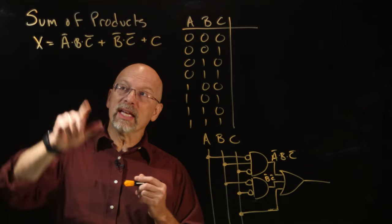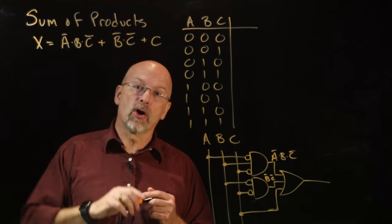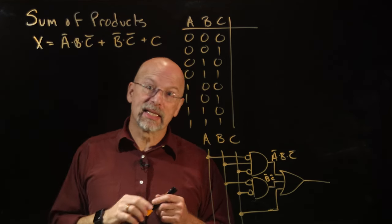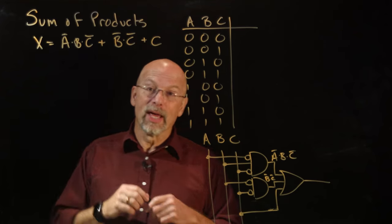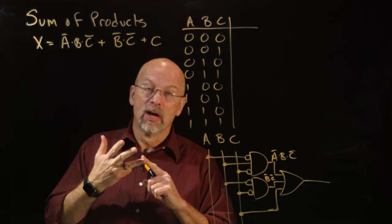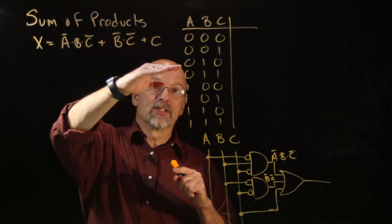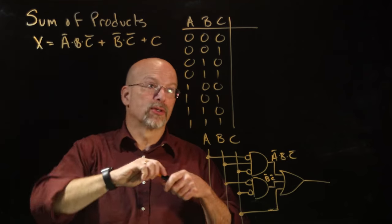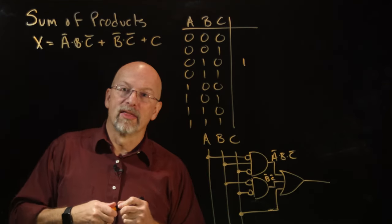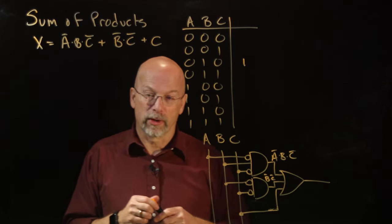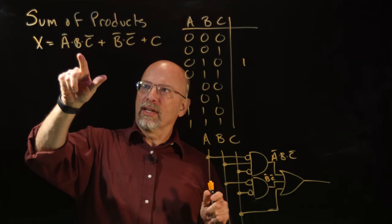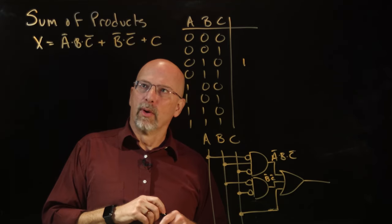When does A-bar, B, C-bar equal 1? A-bar, B, C-bar equals 1 when A is 0, B is 1, and C is 0. That happens in exactly one row of this truth table, so we know there is a 1 there. That takes care of all the cases when this product is equal to 1.